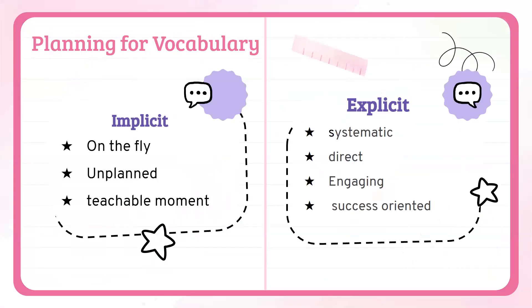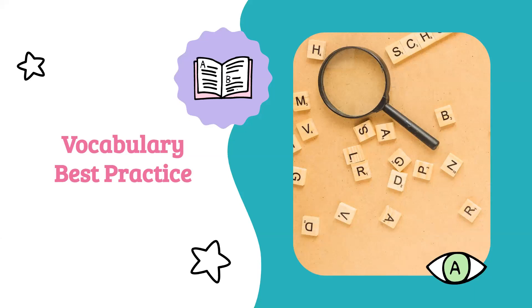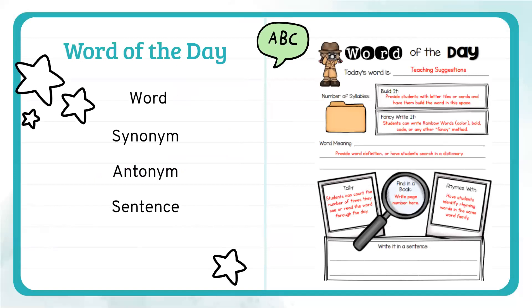When you're planning for vocabulary, there are certain things you can implicitly teach — on the fly, unplanned teachable moments. However, best practice in vocabulary is to teach explicitly: that means systematic, direct, engaging instruction oriented toward making sure students understand the concept. Make sure when explicitly teaching vocabulary that you're being systematic in your approach. For example, with a word of the day, you take the word, show it in context, find a synonym and antonym, and connect it to the actual content you're teaching. Make sure the vocabulary term is always in context.